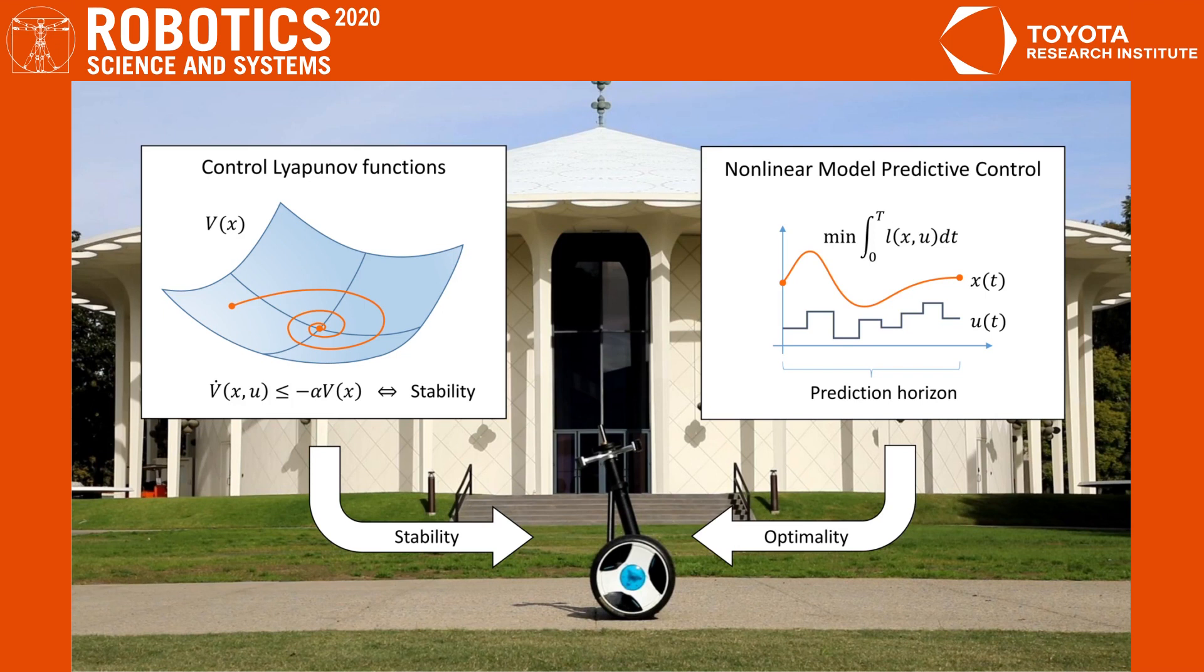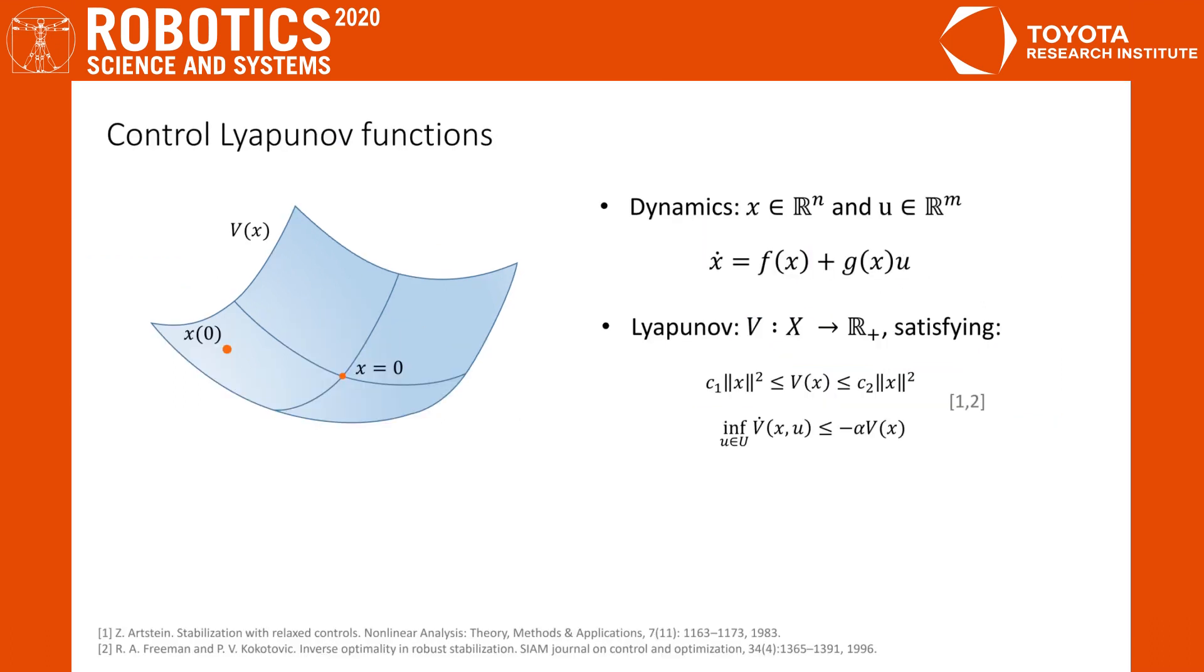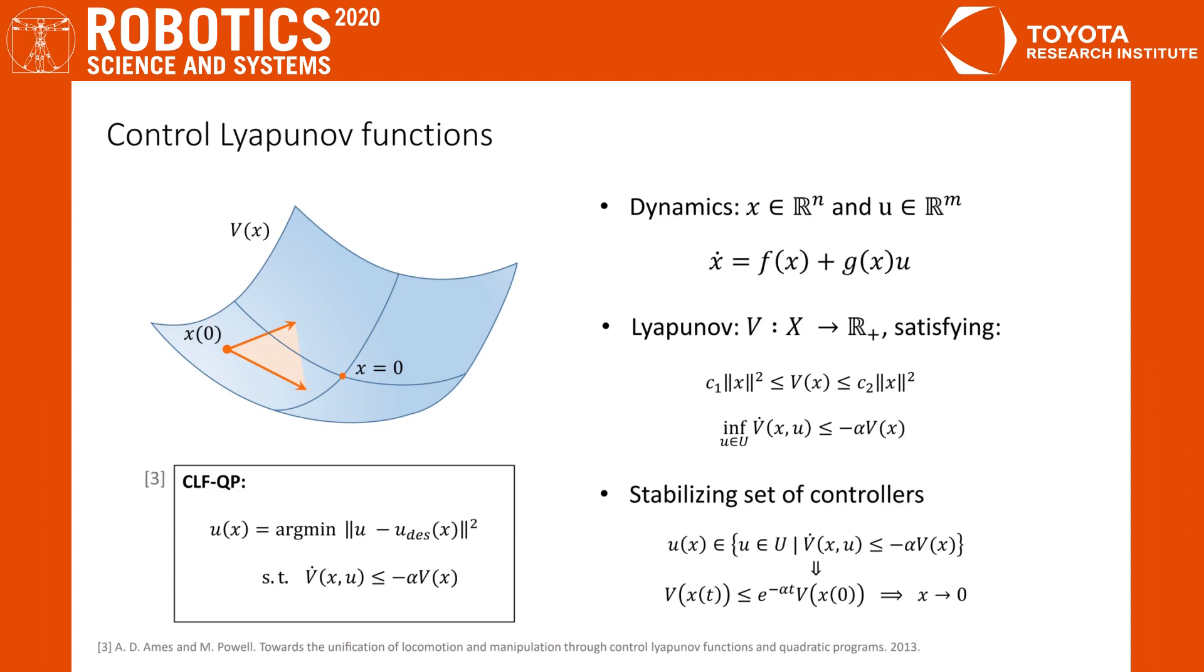We will start by looking at each of these approaches individually as a benchmark, and afterwards compare this to the combined formulations that we propose. We consider a non-linear system in control-affine form and look for a Lyapunov function with the usual properties. We call this a control Lyapunov function if for every state we can find an input that results in sufficient decrease of the Lyapunov function. This allows us to formulate a CLF-QP controller, which selects an input based on some costs and subject to the stabilizing constraint.